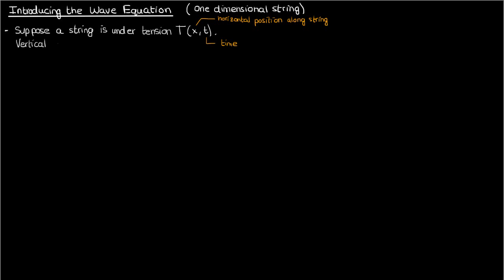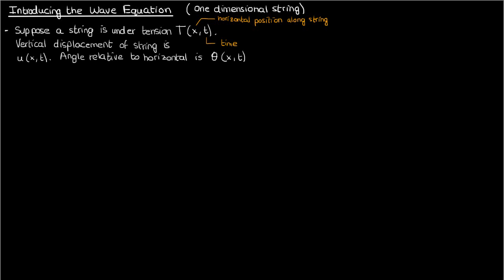The vertical displacement of the string relative to equilibrium is given by u as a function of x and t, and the angle of the string relative to the horizontal is given by theta, which is also a function of the horizontal position x and the time t.